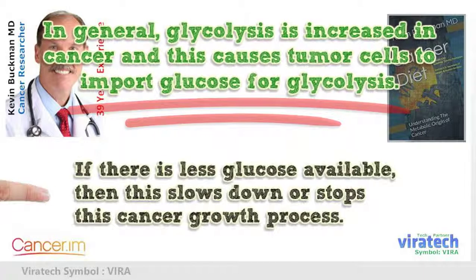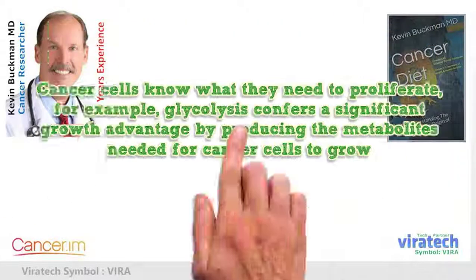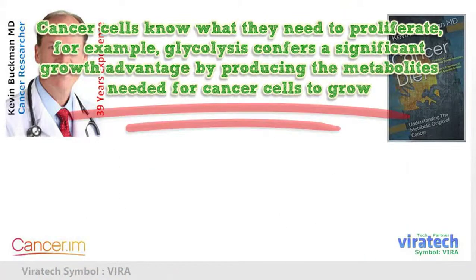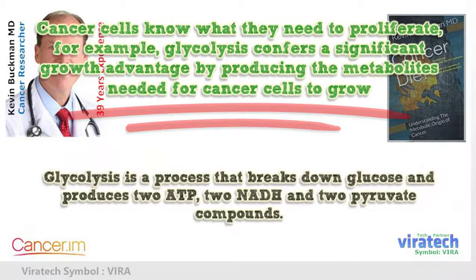If there is less glucose available, then this slows down or stops this cancer growth process. Cancer cells know what they need to proliferate. For example, glycolysis confers a significant growth advantage by producing the metabolites needed for cancer cells to grow. Glycolysis is a process that breaks down glucose and produces 2 ATP, 2 NAD, and 2 pyruvate compounds.